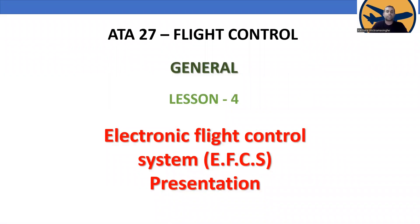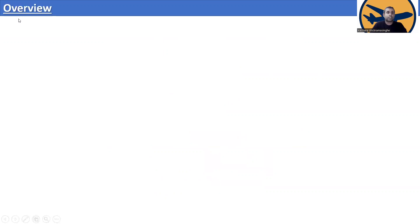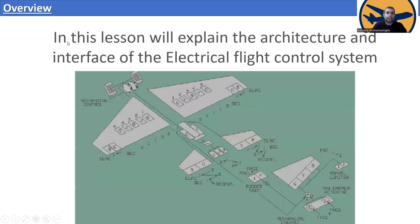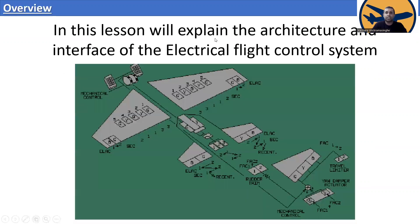This is lesson ATA chapter 27 — flight control general, lesson number four: electronic flight control system presentation. Let's go to the overview. In this lesson you will explain the architecture and interface of the electrical flight control system.